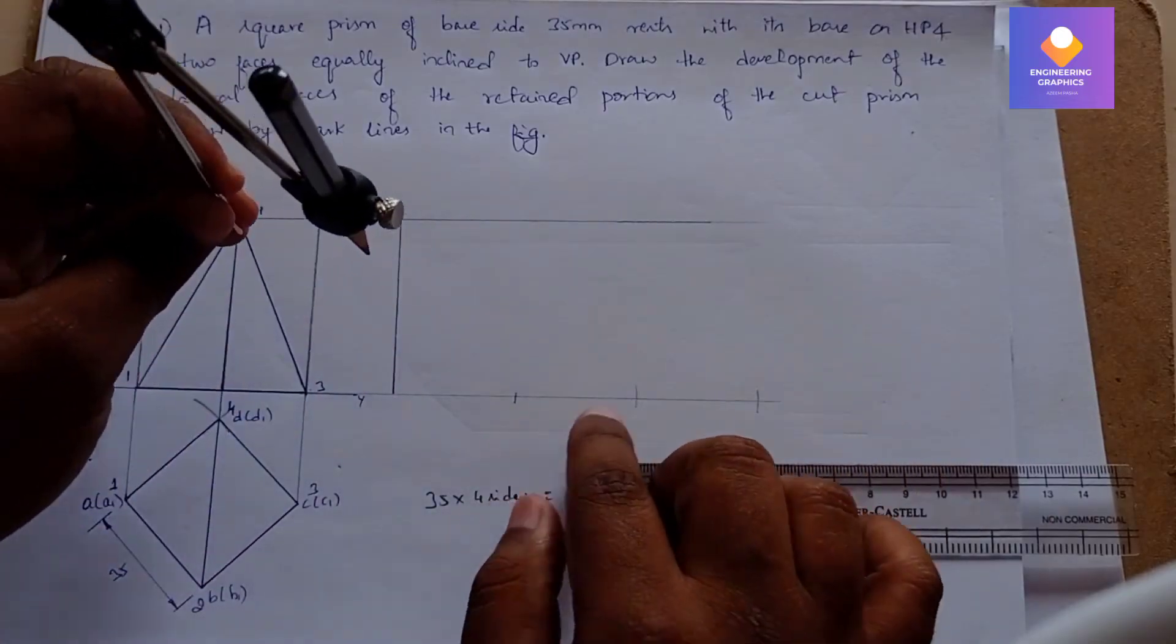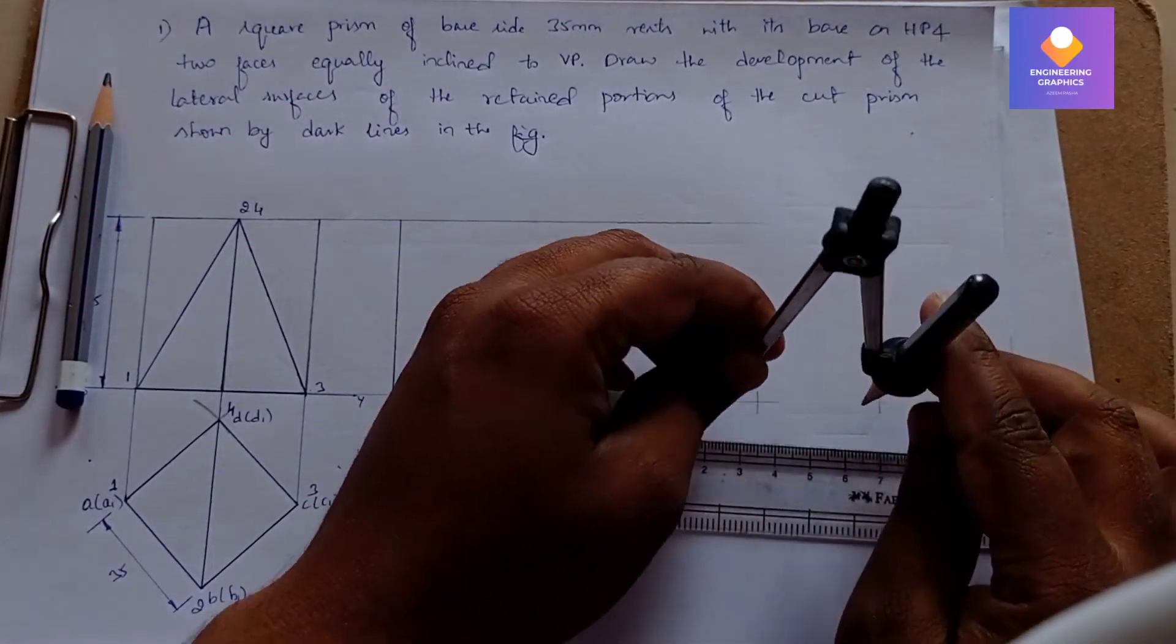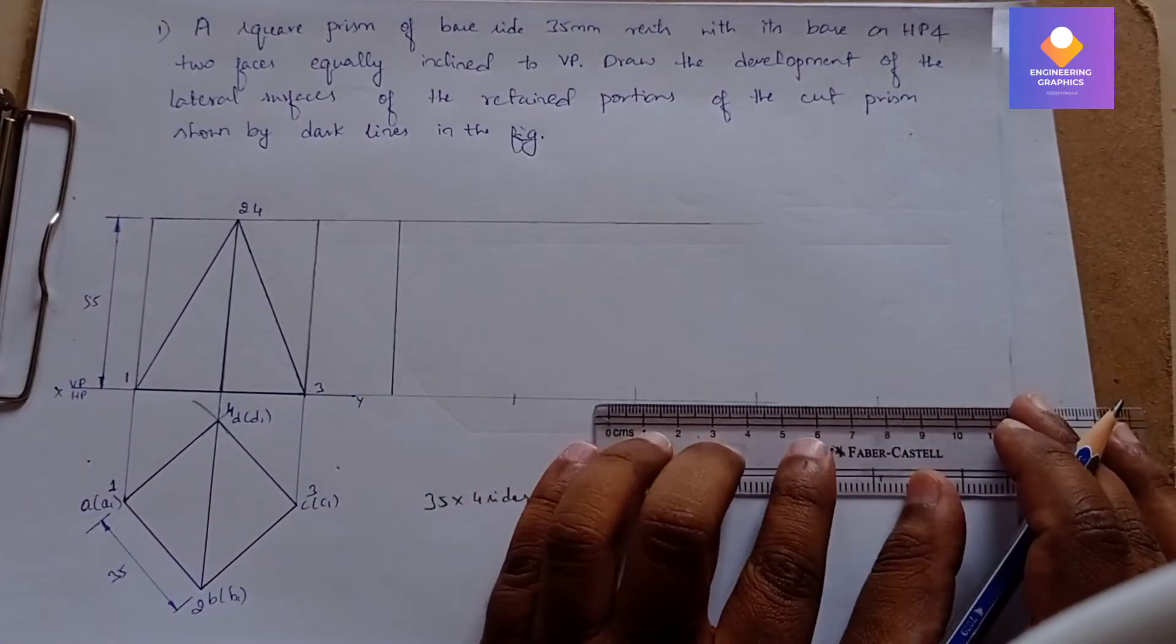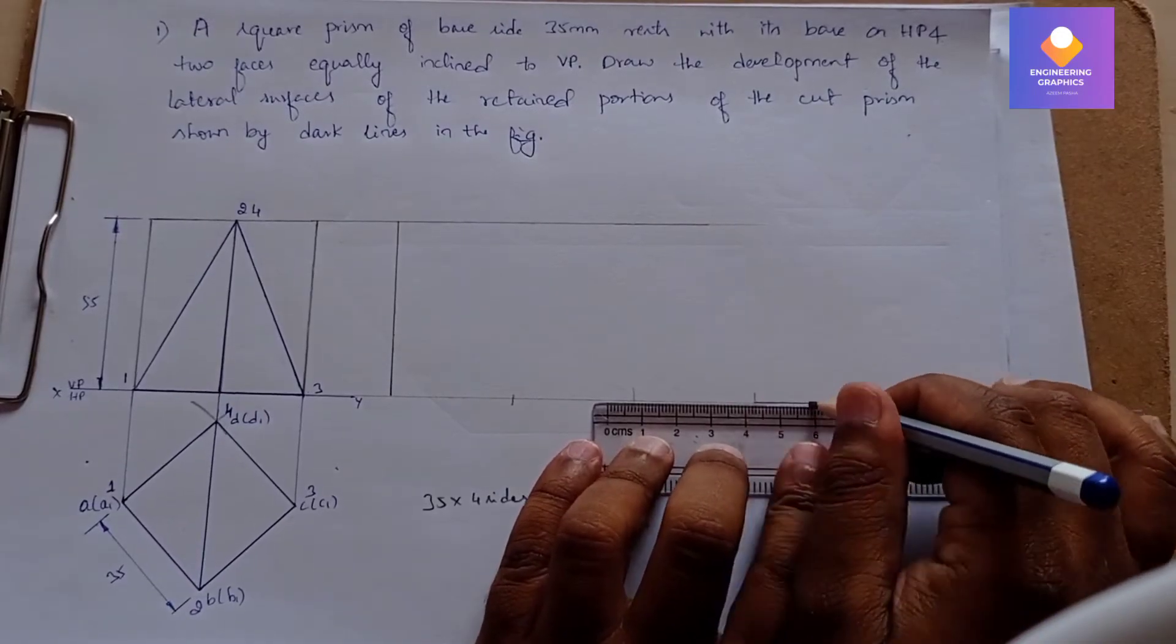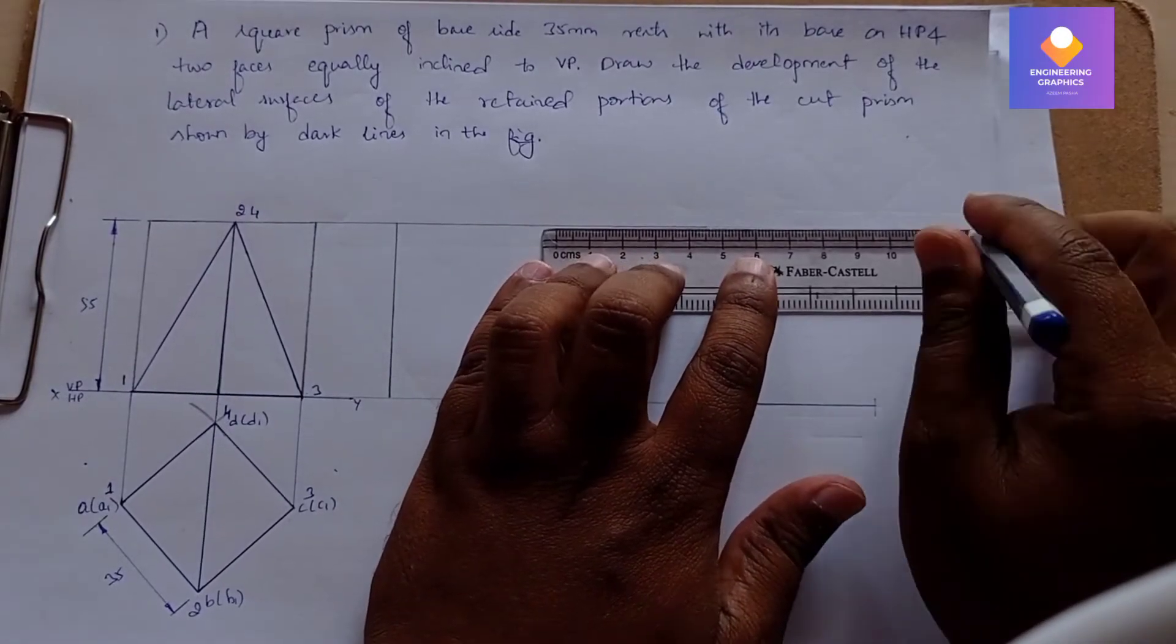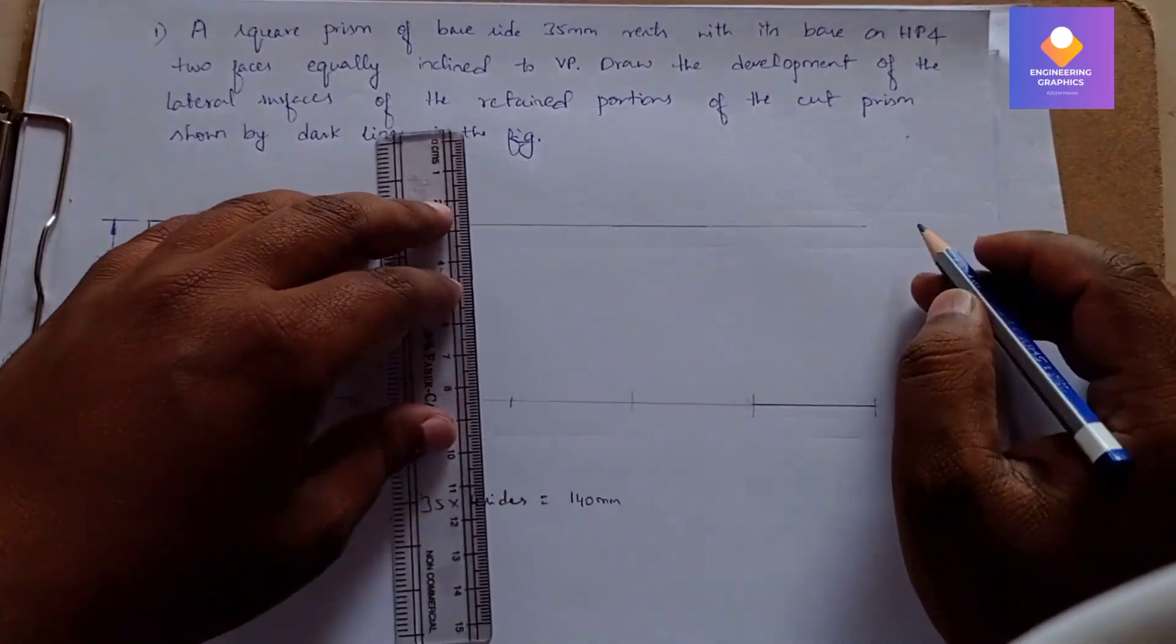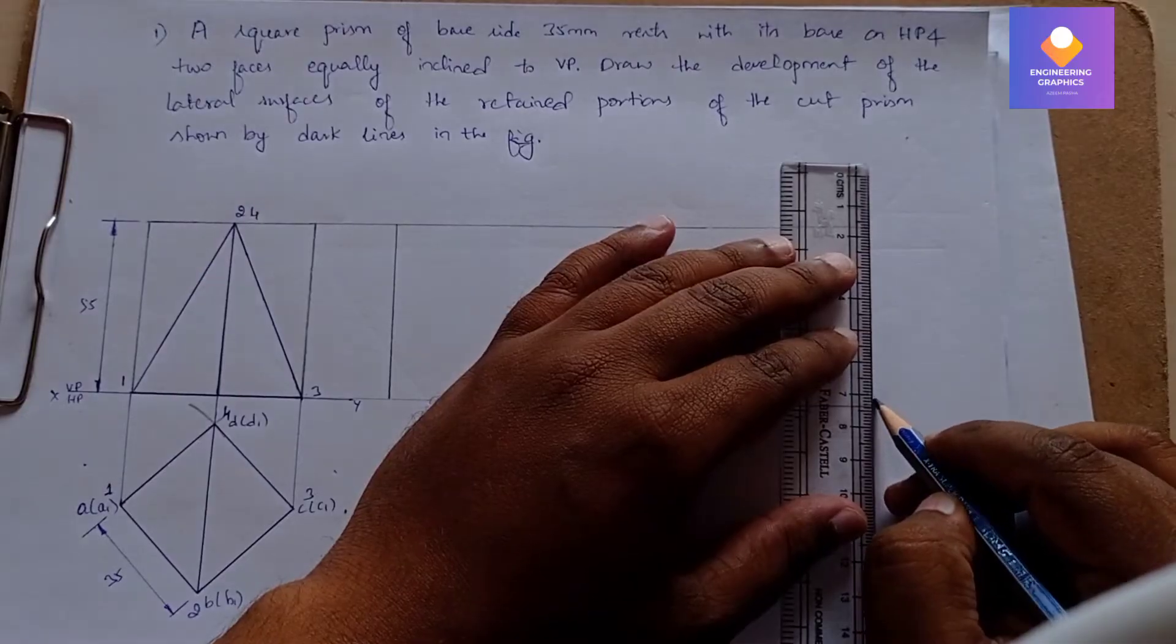We will extend the line here till the cut arc. On the top side, we do the same thing. Now, wherever the cut arc is, we will be drawing vertical lines.